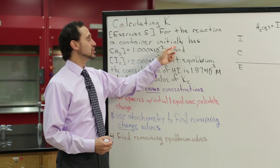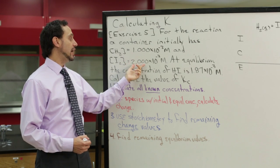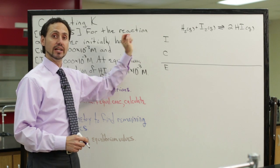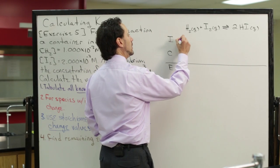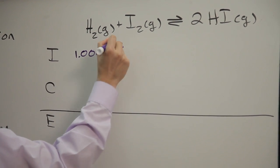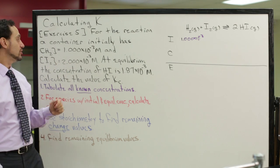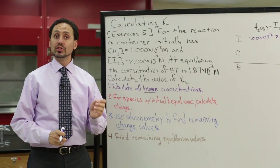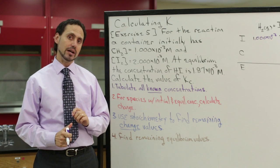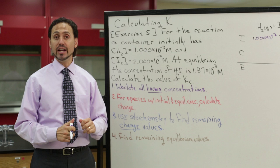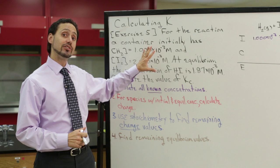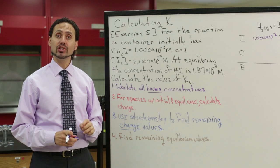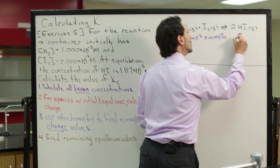Reading through the problem, our container initially has a hydrogen ion concentration and an iodine concentration as listed. We can come over to our ICE table and list those for the initial row. Hydrogen has a concentration of 1.00 × 10⁻³ M and iodine has a concentration of 2.00 × 10⁻³ M. Since the problem does not say we have any hydrogen iodide initially, we can assume its initial concentration is zero, and add that to the ICE table.